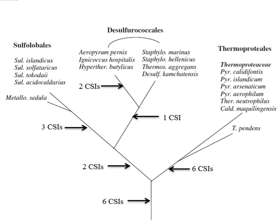A key issue in bacterial phylogeny is to understand how different bacterial species are related to each other and their branching order from a common ancestor. Currently most phylogenetic trees are based on 16S rRNA or other gene proteins. These trees are not always able to resolve key phylogenetic questions with a high degree of certainty. However, in recent years the discovery and analyses of conserved indels in many universally distributed proteins have aided in this quest. The genetic events leading to them are postulated to have occurred at important evolutionary branch points, and their species distribution patterns provide valuable information regarding the branching order and interrelationships among different bacterial phyla.